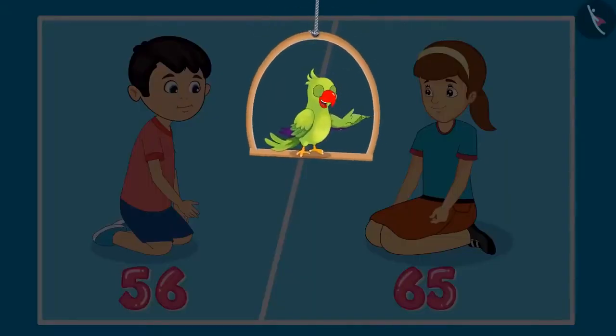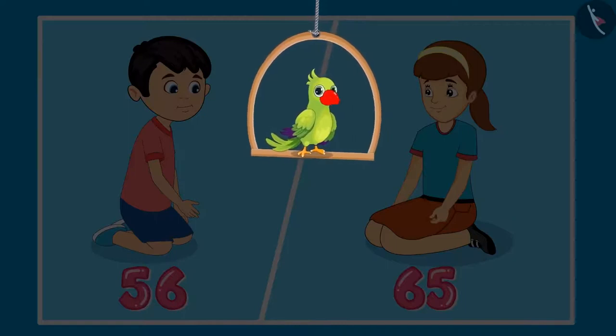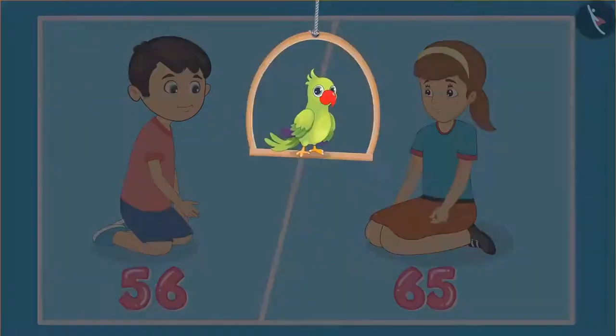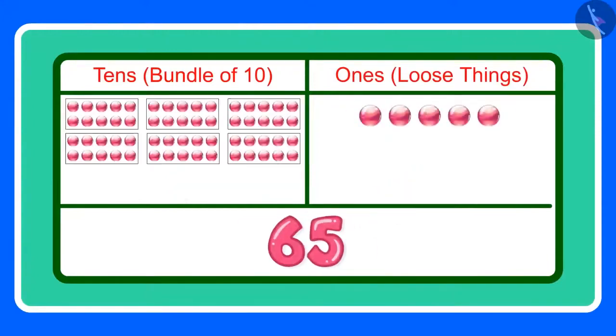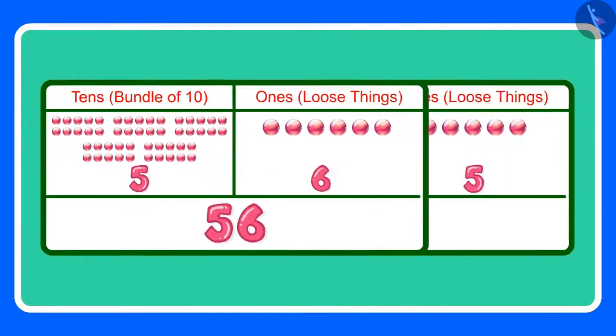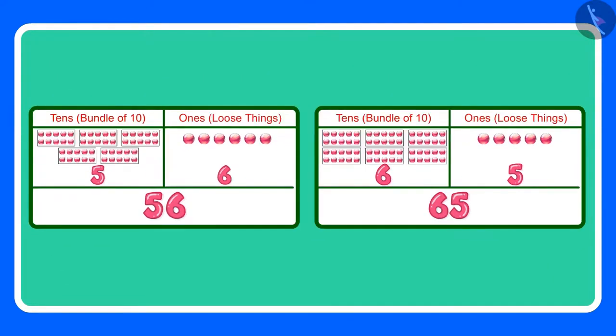Children, what do you think? Are 56 and 65 equal? Come, let us see. 56 means 5 tens and 6 ones. And 65 means 6 tens and 5 ones. The two numbers have different tens and ones. This means that 56 and 65 are not equal. Children, can you tell me which number is greater between the two? Yes, correct. 65 is the greater number because it has more tens.